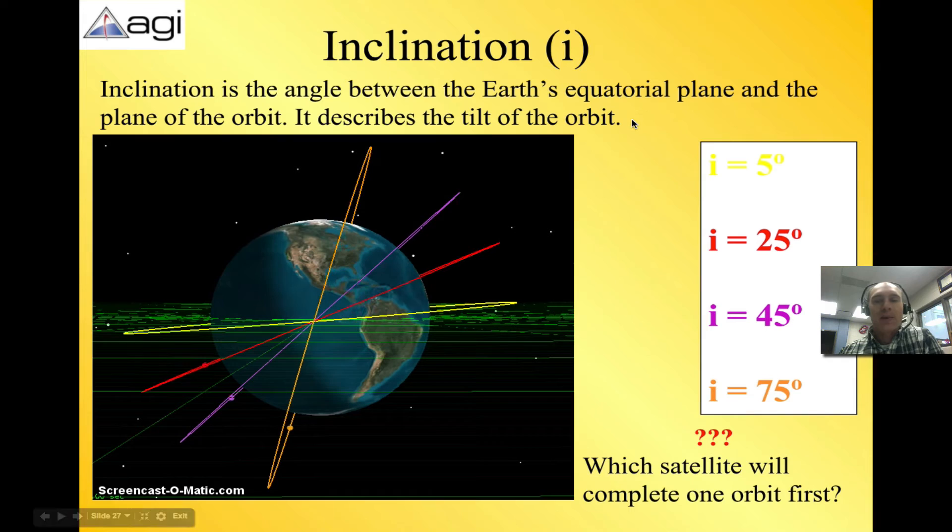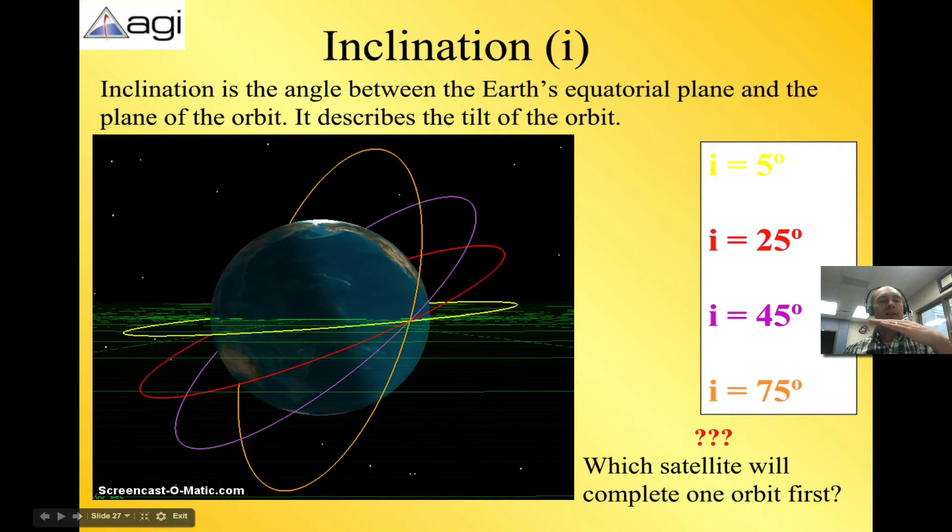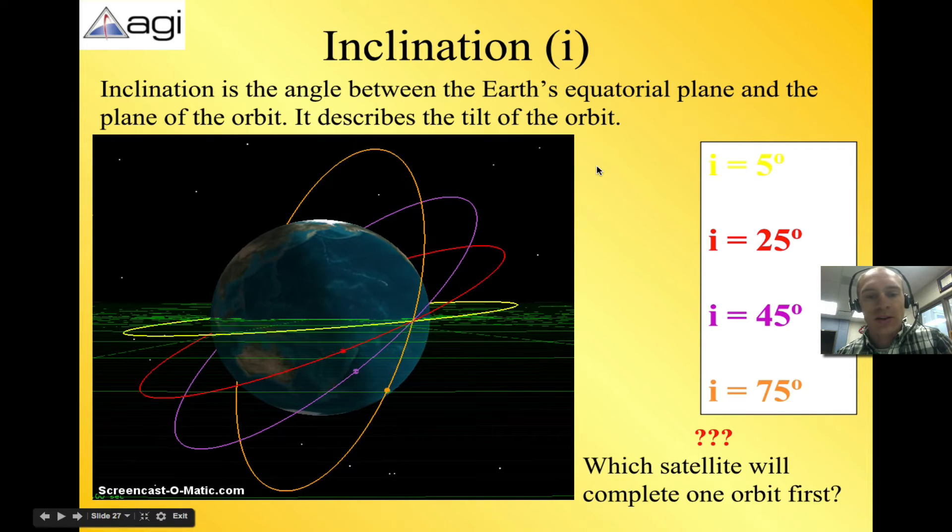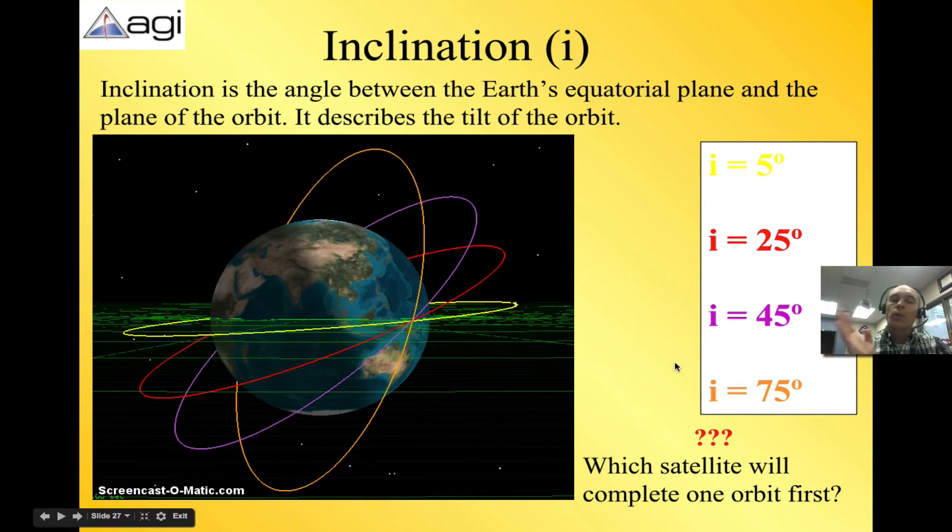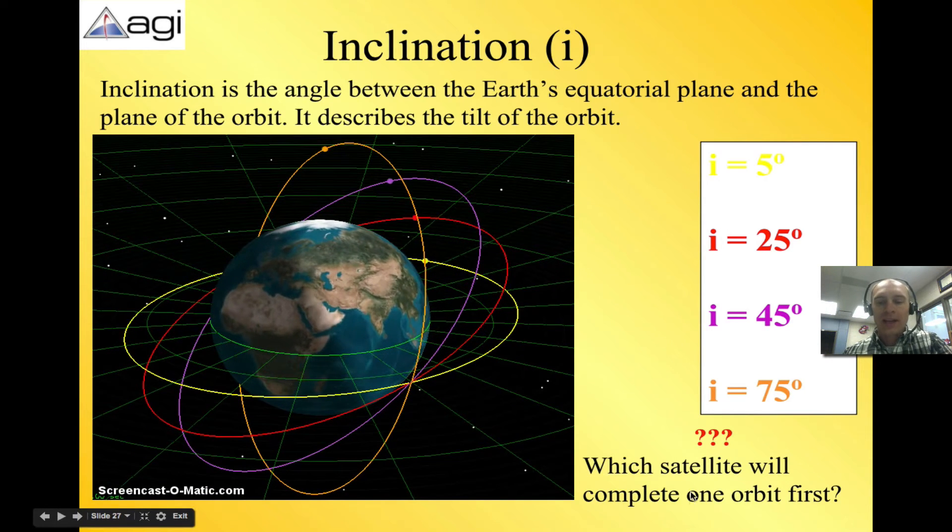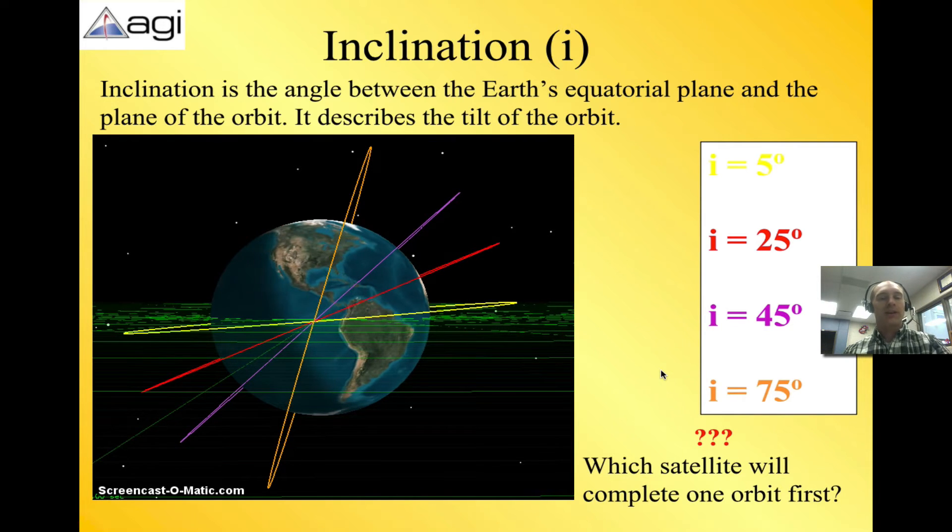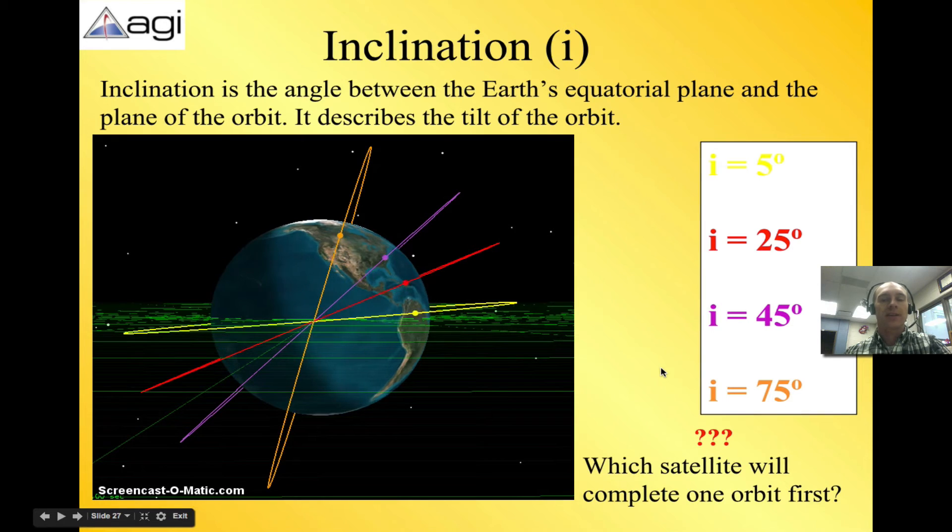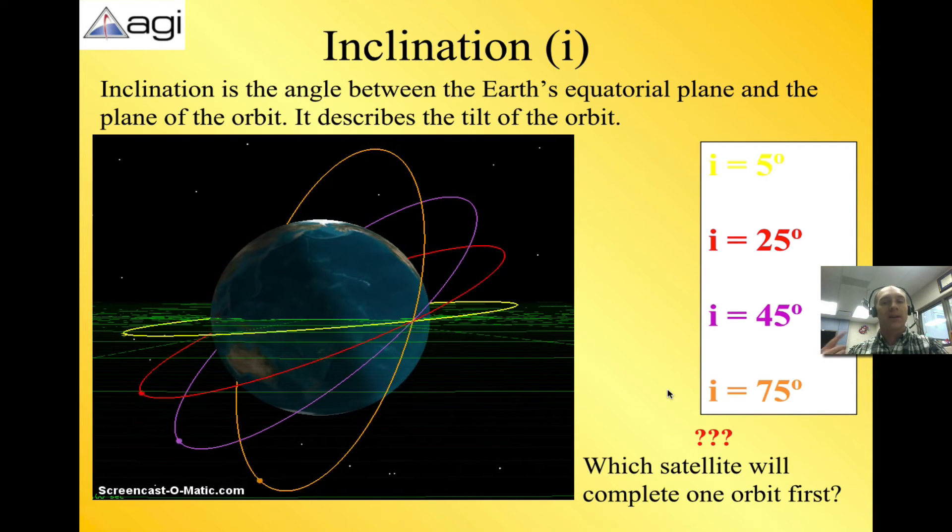Inclination is probably one of the easier ones to understand. It's just the angle between the Earth's equator and the plane of orbit, so it describes the tilt of the orbit. The yellow one is a five-degree tilt, almost straight with the equator. And then the orange one is 75 degrees, almost 90 degrees, which would be what you'll learn later as a polar orbit. Which satellite will complete one orbit first? Well, they all would complete it at the same time. It doesn't really matter the inclination. That does not change the period, because the only thing that affects the period is semi-major axis, if you remember from that equation.